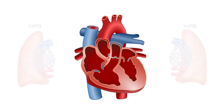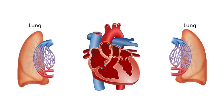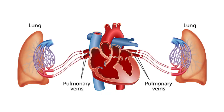Oxygenated blood from the lungs travels through large vessels called the pulmonary veins and enters the left side of the heart, emptying directly into the left atrium. The pulmonary veins are unusual in that they carry oxygenated blood. Other veins, because they carry blood back to the heart from the body tissues, carry deoxygenated blood.